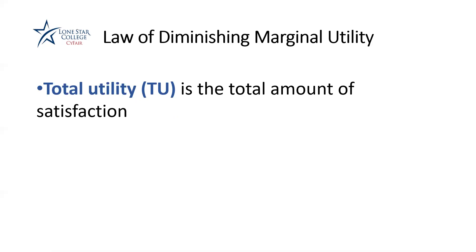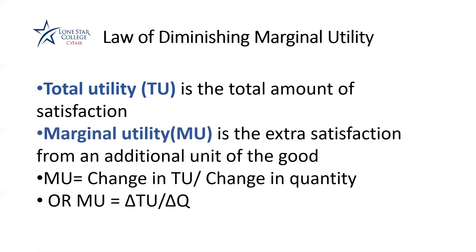And then we have marginal utility, or MU. Remember from Chapter 1 that marginal means additional or extra. In Chapter 1, we defined marginal benefit and marginal cost. So marginal utility is the extra satisfaction from using one more unit of output — your extra satisfaction from eating one more taco or drinking one more cup of water. You can measure marginal utility numerically using this formula: marginal utility is the change in total utility divided by change in quantity, or ΔTU divided by ΔQ.